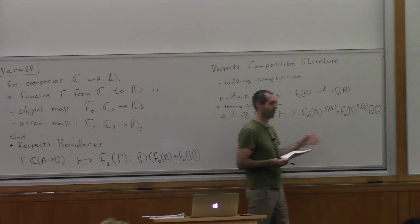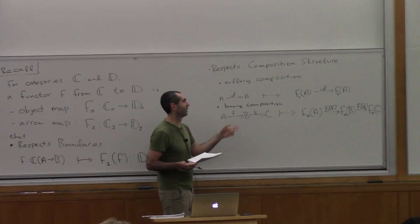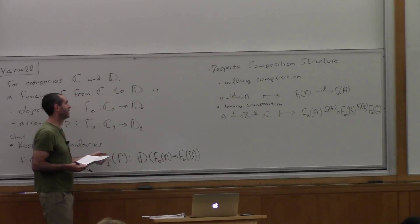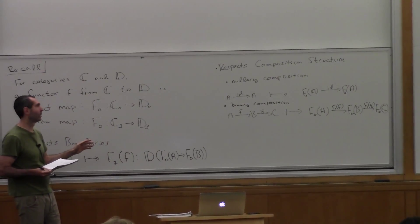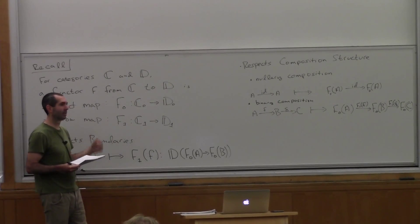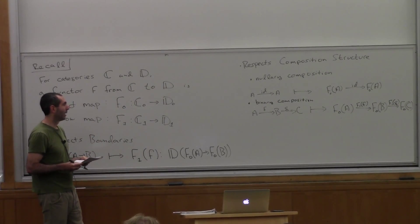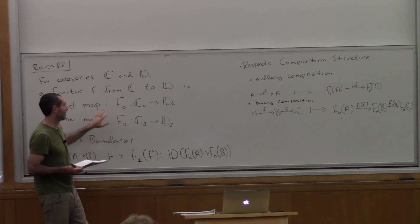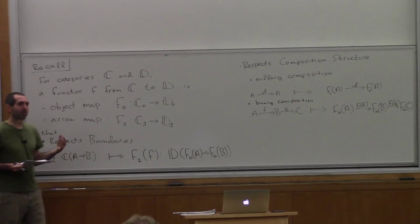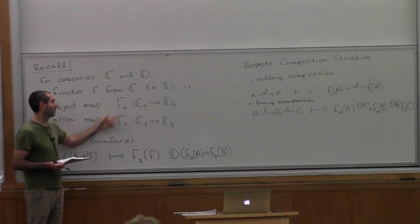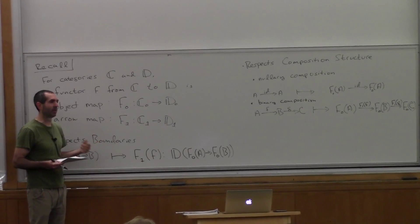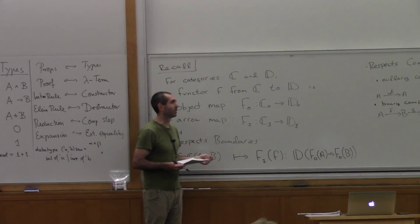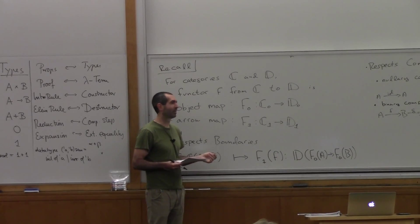For binary composition: if you send a composite of two arrows over by the functor, then you should get the composition of the functor images. The point is, it doesn't matter whether you first do the composition in the domain and then send the whole thing over, or if you send the parts over and then do the composition. Because these subscripts are a bit unwieldy, we'll stop writing them and drop the subscripts — the dimension will be clear from context whether f is being applied to an object or an arrow.